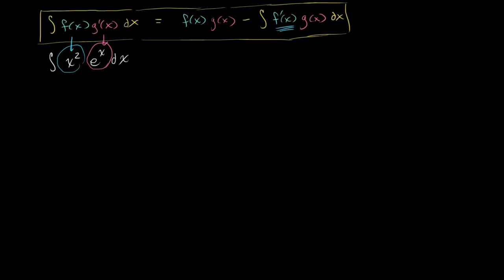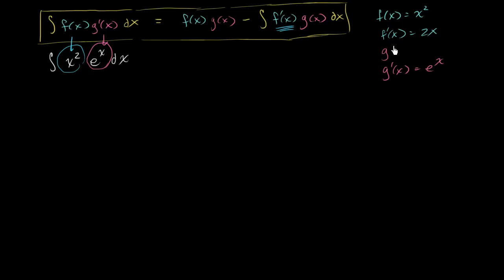Let me write this down. f of x is equal to x squared, which means f prime of x is equal to 2x. I'm not worrying about constants right now — we'll add a constant at the end for the most general antiderivative form. And g prime of x is equal to e to the x, which means its antiderivative, g of x, is still equal to e to the x. Now we're ready to apply the integration by parts formula.